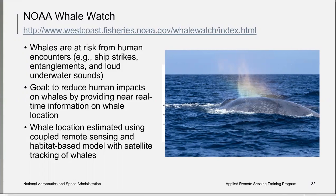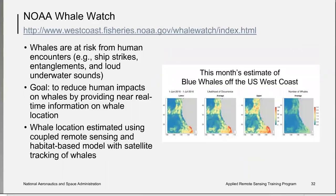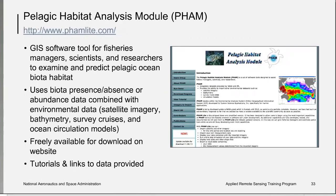The Whale Watch tool uses an ecosystem forecasting method incorporating historical knowledge of whale migration under varying seasons and environmental conditions, in situ information from tagged whales, and remote sensing and model estimates for the probability of encountering a whale. The Pelagic Habitat Analysis Module, or PHAM, is a set of software tools designed to assist fisheries managers, scientists, and researchers to examine and predict habitat for pelagic ocean biota, utilizing presence-absence or abundance data combined with environmental datasets such as satellite imagery, bathymetry, survey cruises, and ocean circulation models. It is freely available.